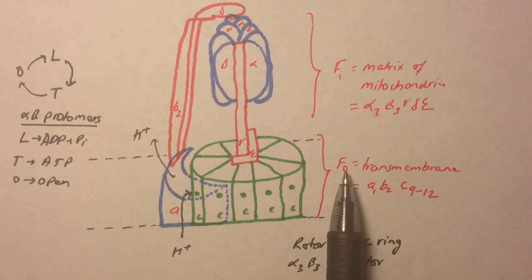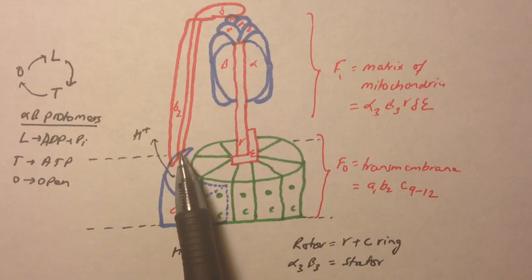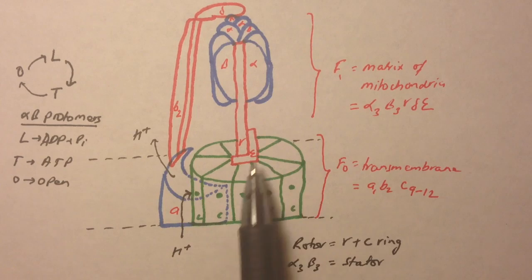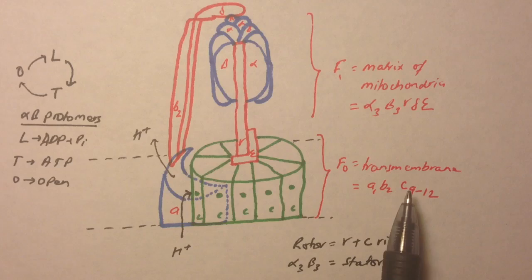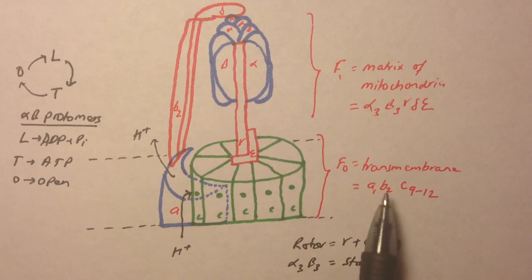F0 is composed of a1, b2, c9-12. So this blue subunit is our a. These green things are C, depending on organism. The organism could have 9 to 12, bacteria has 10. And it has b2 which are these sticks right here. So that's our F0.